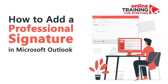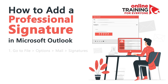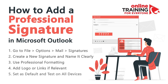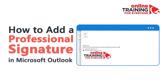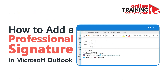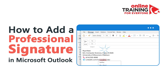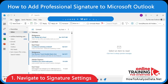Most professionals eventually face the challenge of creating a clean, consistent email signature in Microsoft Outlook. Whether you're emailing clients, professors, recruiters, or team members, a well-designed signature makes you look more credible, polished, and easy to reach. Let me walk you through how to add and set up a professional signature in Outlook, and how to design one that works across devices. Let's start by opening Outlook and getting to the signature settings.